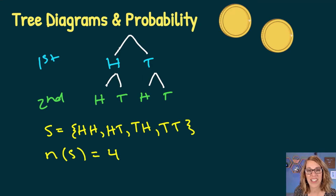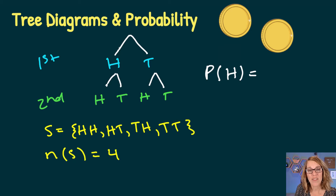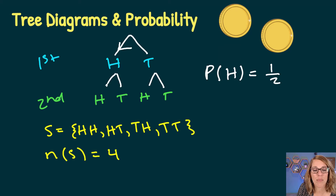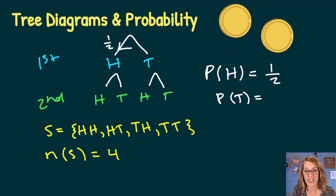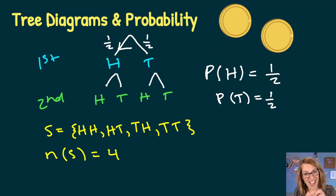Now let's fill in the probabilities on our tree diagram. The probability of getting heads on one flip is one favorable outcome out of two possible outcomes, so that's one-half or 0.5 along the first branch. The probability of a tail is also one favorable outcome out of two, which is one-half or 0.5 on that next branch.